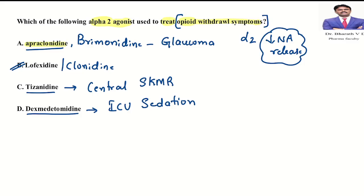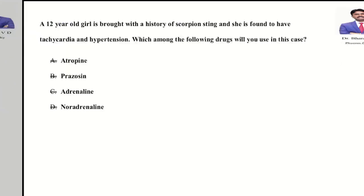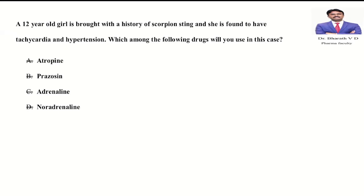To summarize: apraclonidine, brimonidine, lofexidine, clonidine, tizanidine, and dexmedetomidine are all alpha-2 agonists with different indications. Apart from opioid withdrawal, clonidine is also used to manage hypertension, tics disorder, and as a patch to manage hot flushes in postmenopausal women.